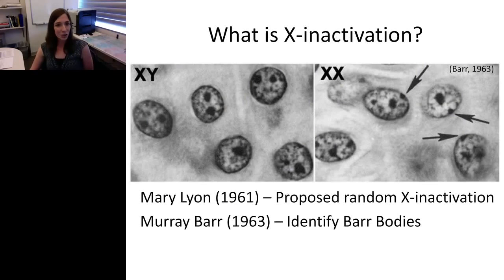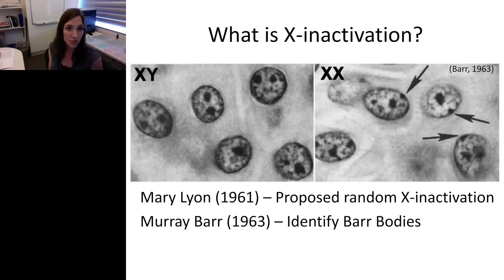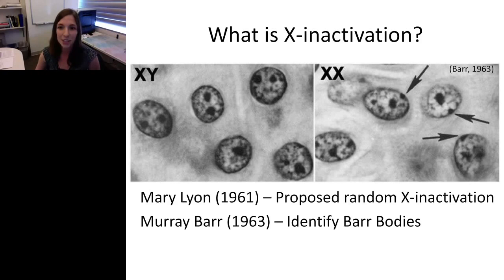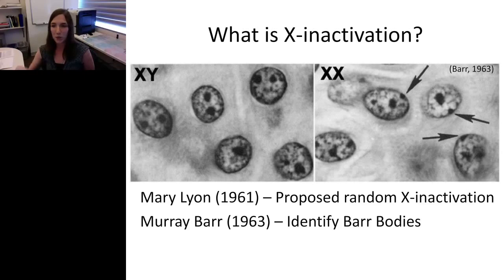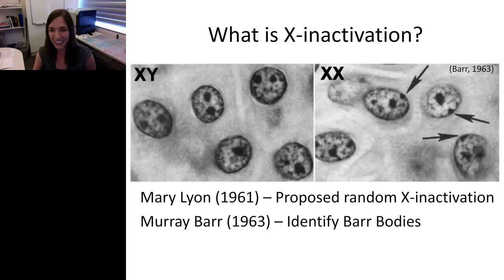What is X inactivation? In 1961, Mary Lyon proposed the random X inactivation hypothesis: in genetic females who have two large X chromosomes, one of those X chromosomes will be randomly chosen to be inactivated. We observe this — looking at cells in the nucleus, there is a darkly stained blob on the side that is a silenced X chromosome. In 1963, Murray Barr identified these blobs as a Barr body. You can actually take a cheek swab and look at it under a microscope to observe your Barr bodies depending on your number of X chromosomes.